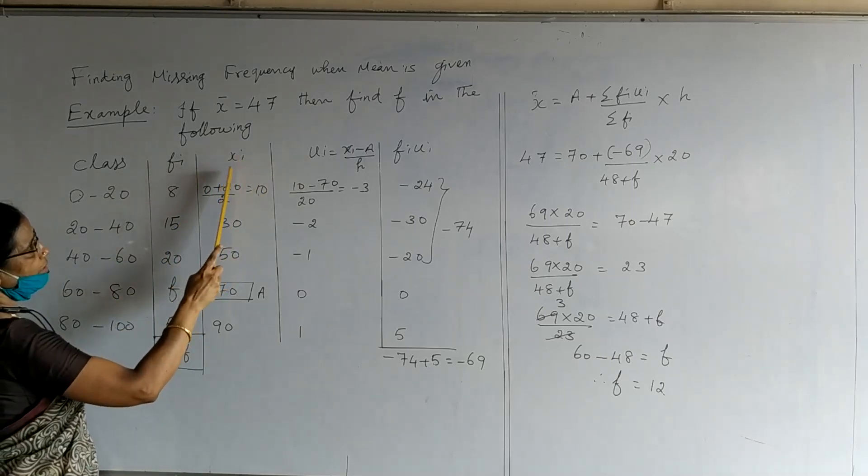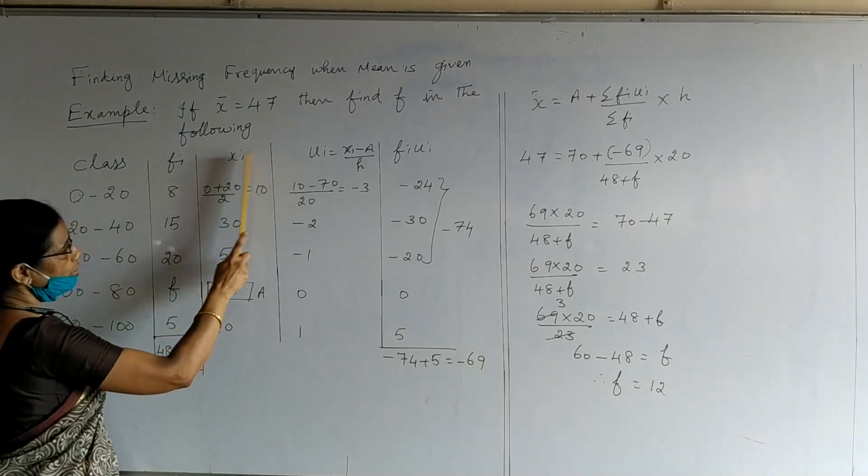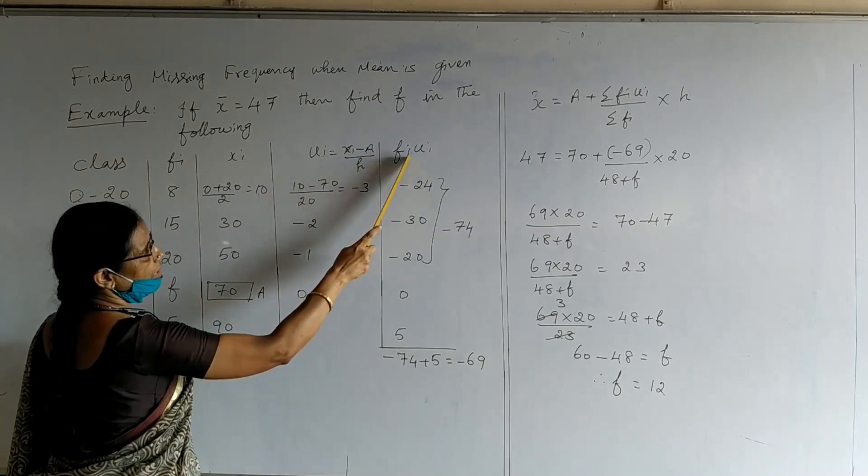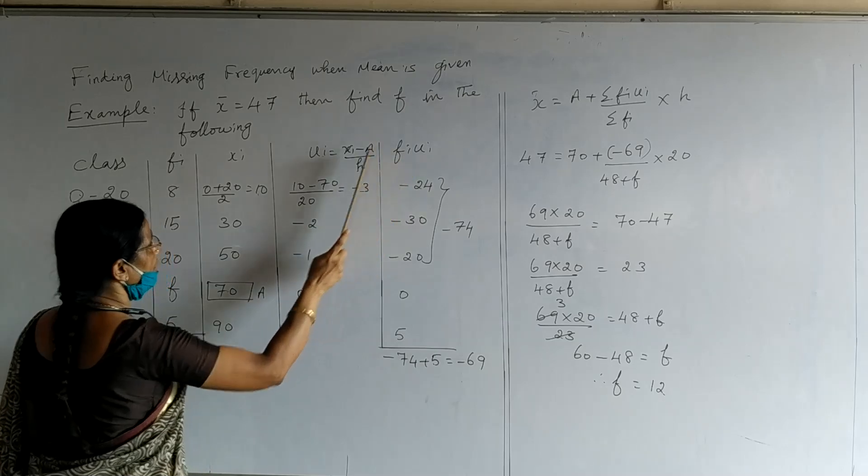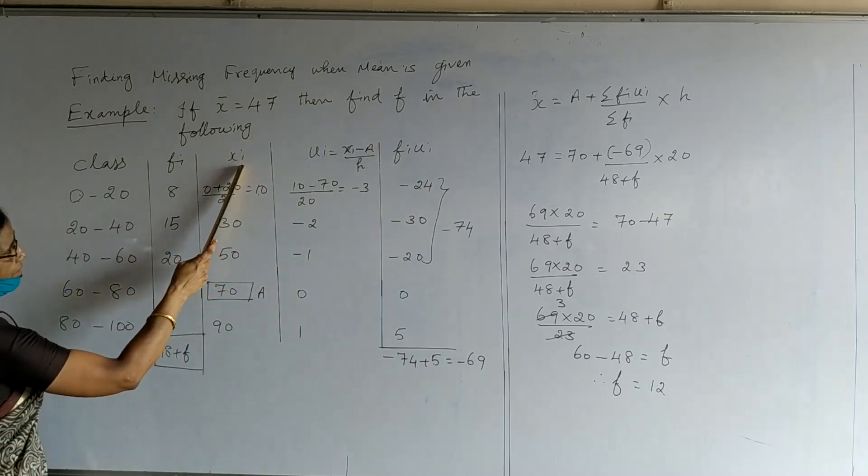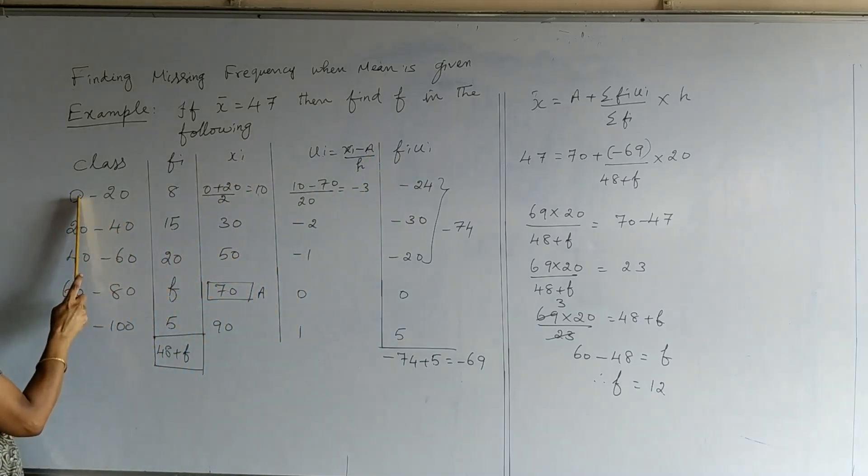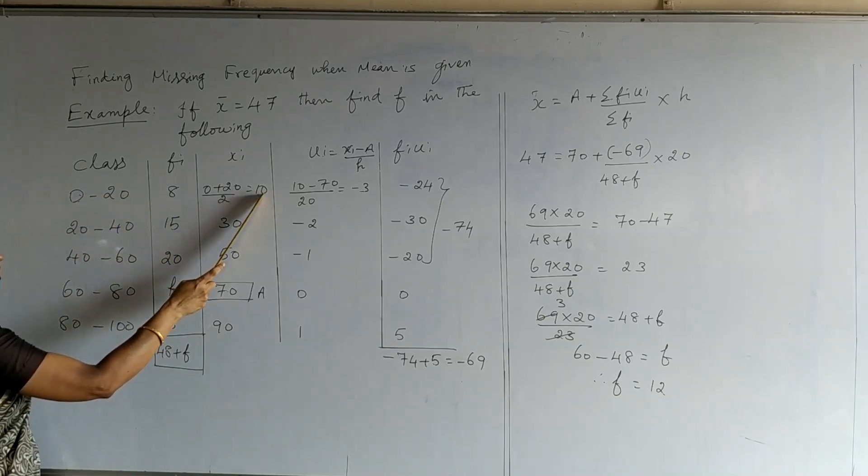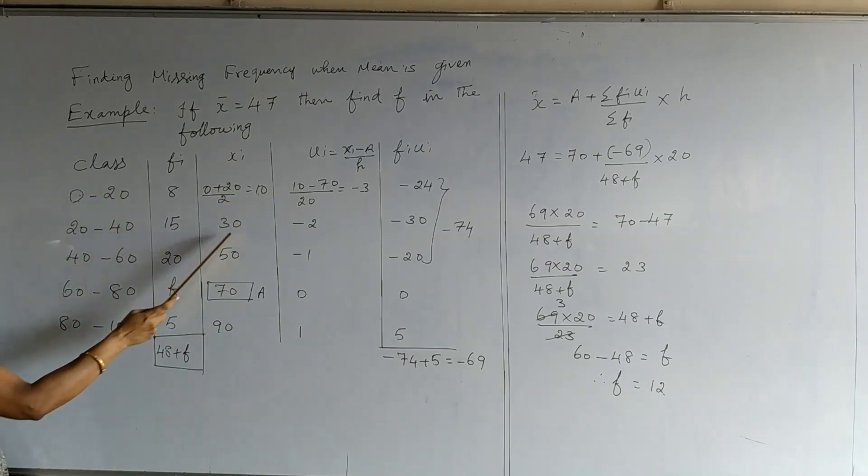The heading for step deviation method is: third column is mid-value, fourth column is ui which is xi minus a upon h, and the last column is fi ui. We know how to calculate xi which is mid-value, it is sum of these two numbers divided by 2 which gives 10. Similarly, we get the mid-value of the second class as 30, 50, 70, 90 for the remaining classes.